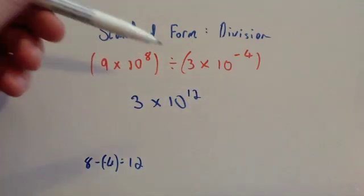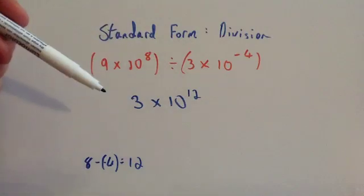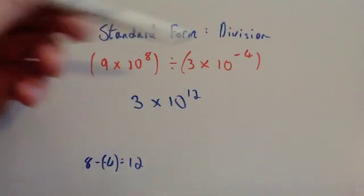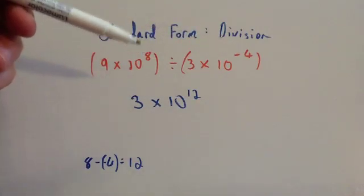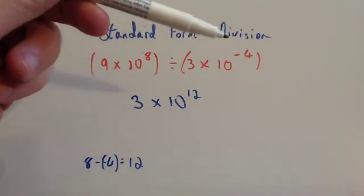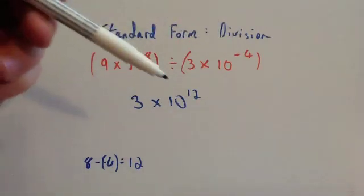So you do 9 divided by 3 which is 3, and you take away the powers. 8 take away minus 4 is 12.